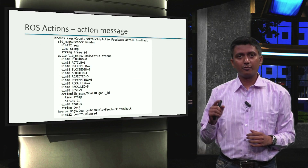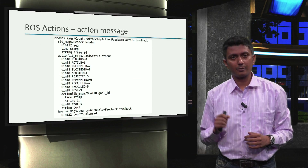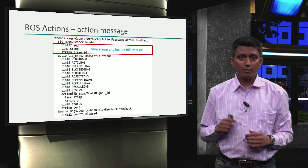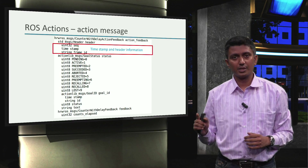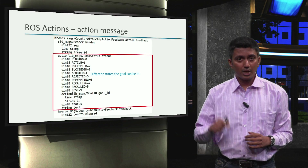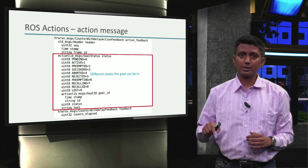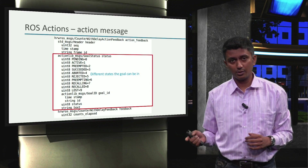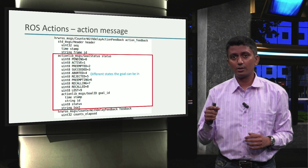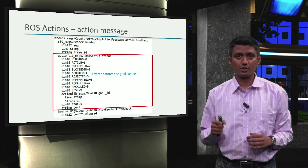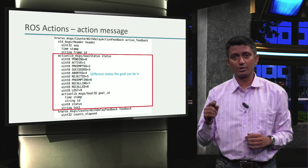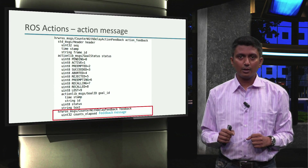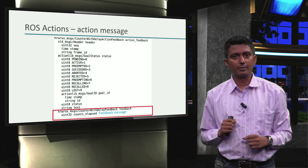Then we have the feedback — the action_feedback message. Here too, we have the timestamp and header information first. Because this is a feedback message to the user about what is going on at the action server, it also has the goal status field that corresponds to the state that the action goal processing state machine is in. And lastly, the content of the user-side feedback message.